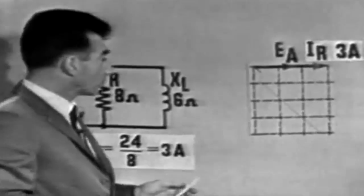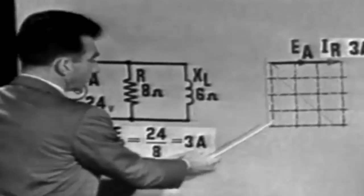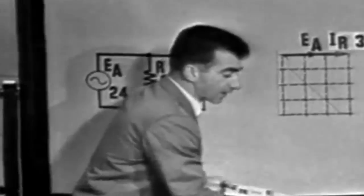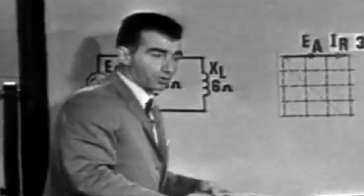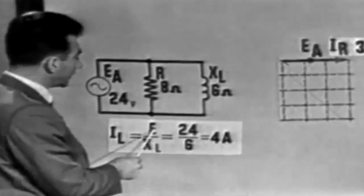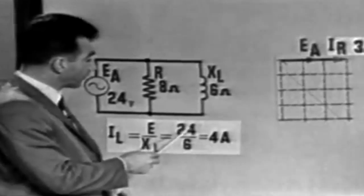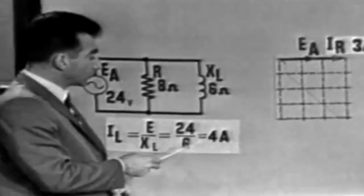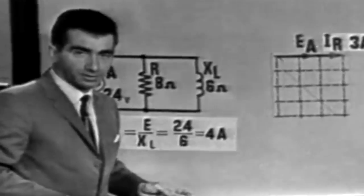Now, to find IL, or the inductive current, we would do the same thing, use the same method, that is, apply Ohm's Law. IL is equal, then, to E over XL, or 24 over 6 ohms, which IL equals 4 amperes.